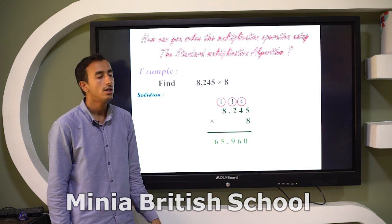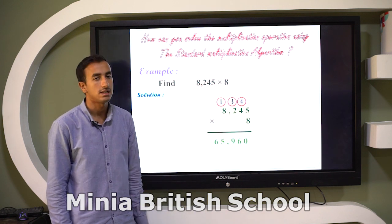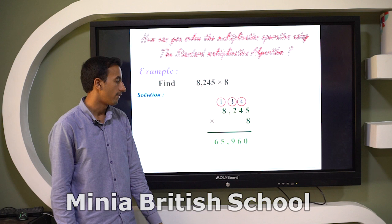So eight times 8 is equal to 64 plus 1, it's equal to 65.